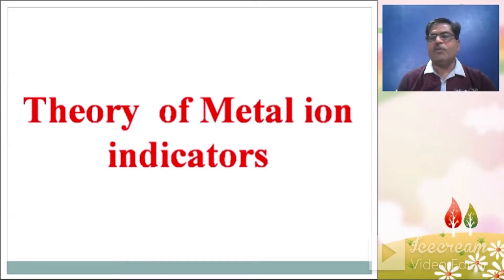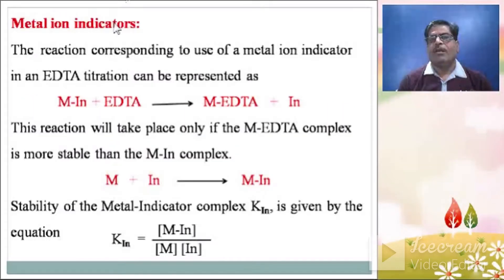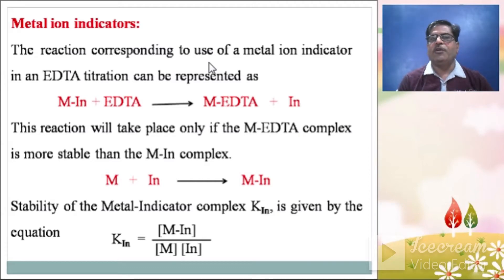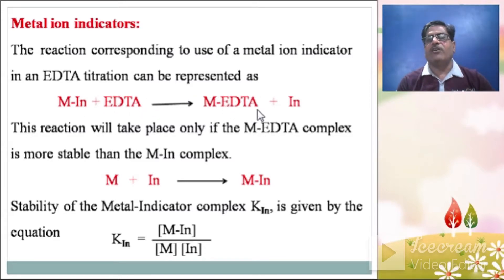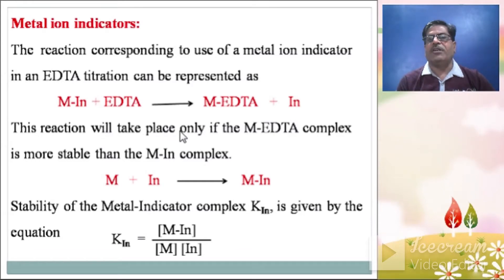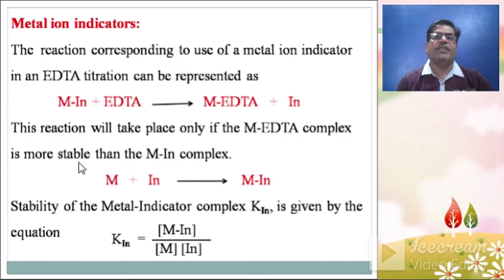Regarding metal ion indicators, the reaction corresponding to use of a metal ion indicator in an EDTA titration can be represented as: metal indicator plus EDTA gives metal EDTA complex. Plus the indicator is freed from the solution. This reaction takes place only if the metal EDTA complex is more stable than the metal indicator complex.